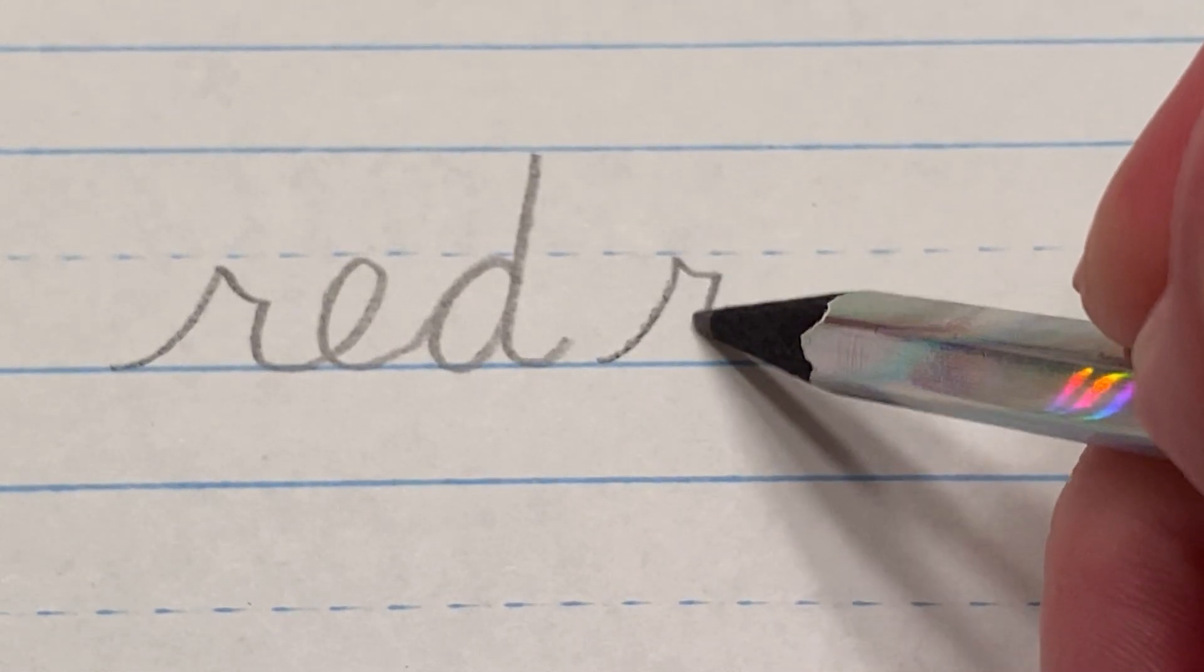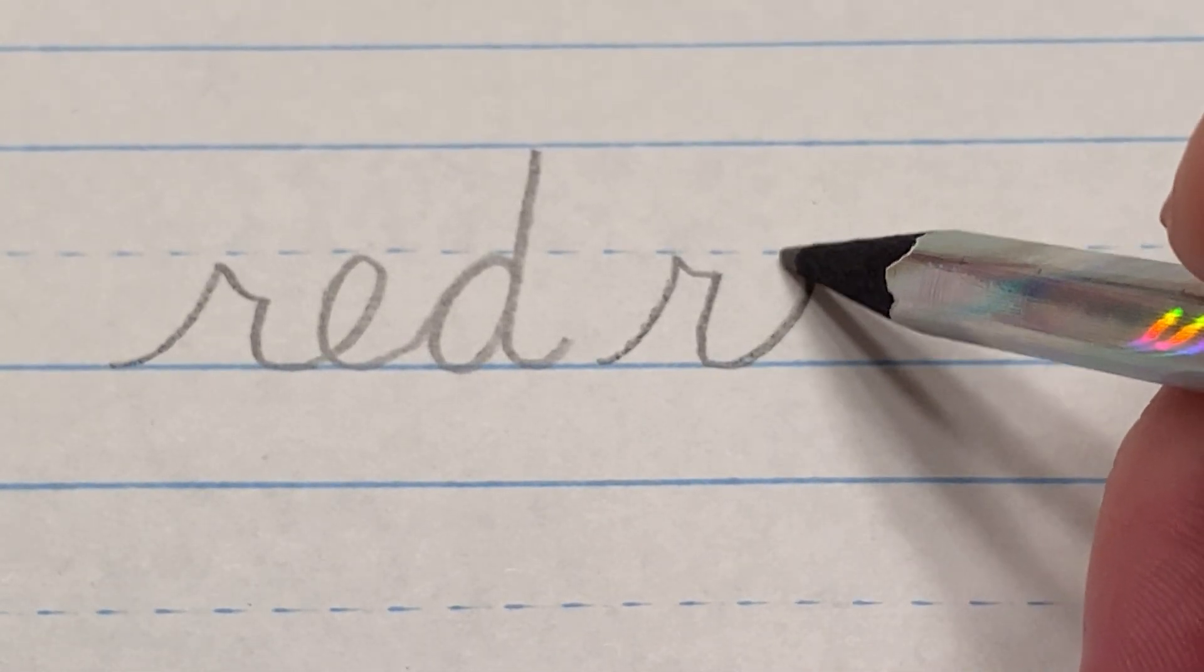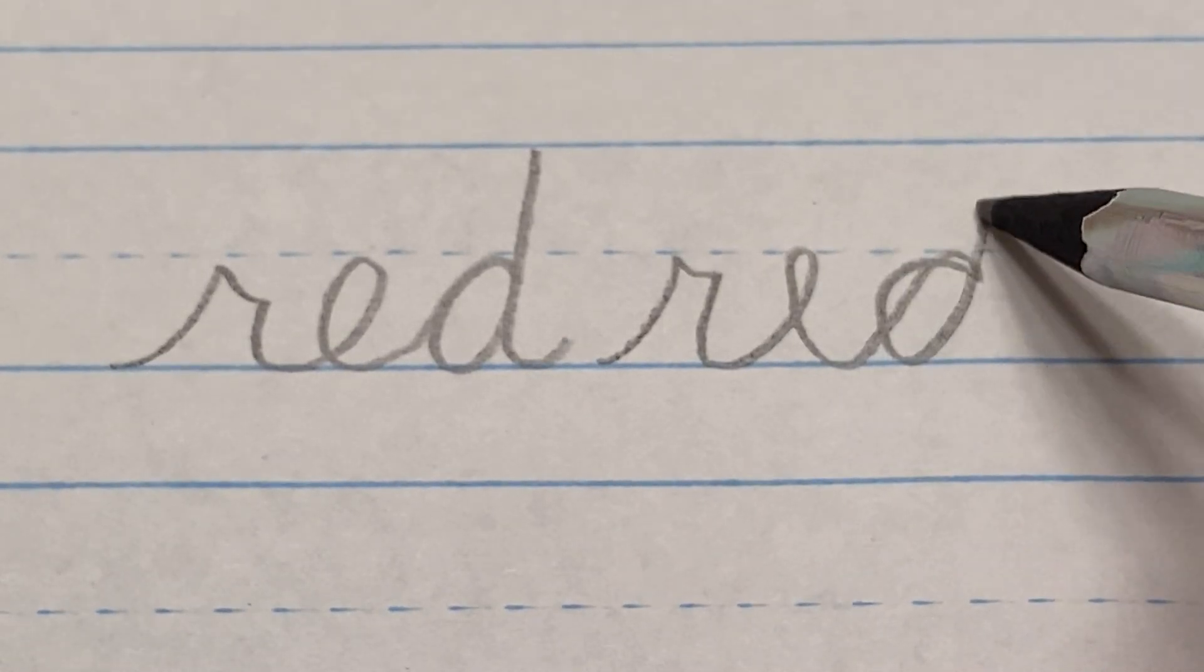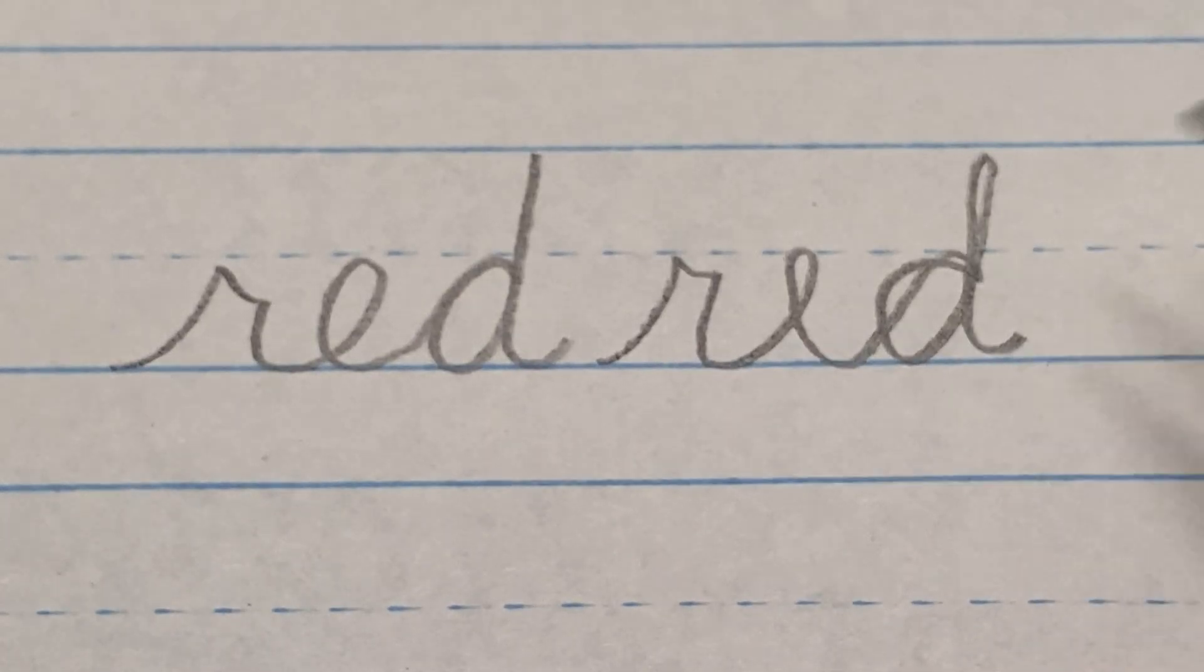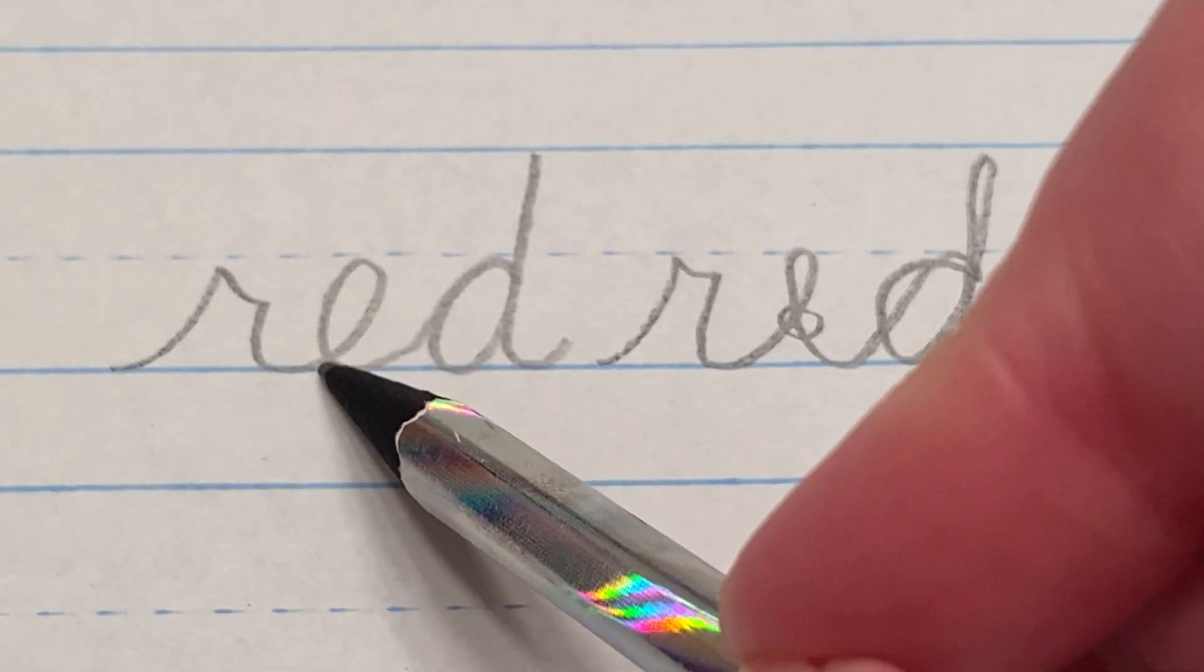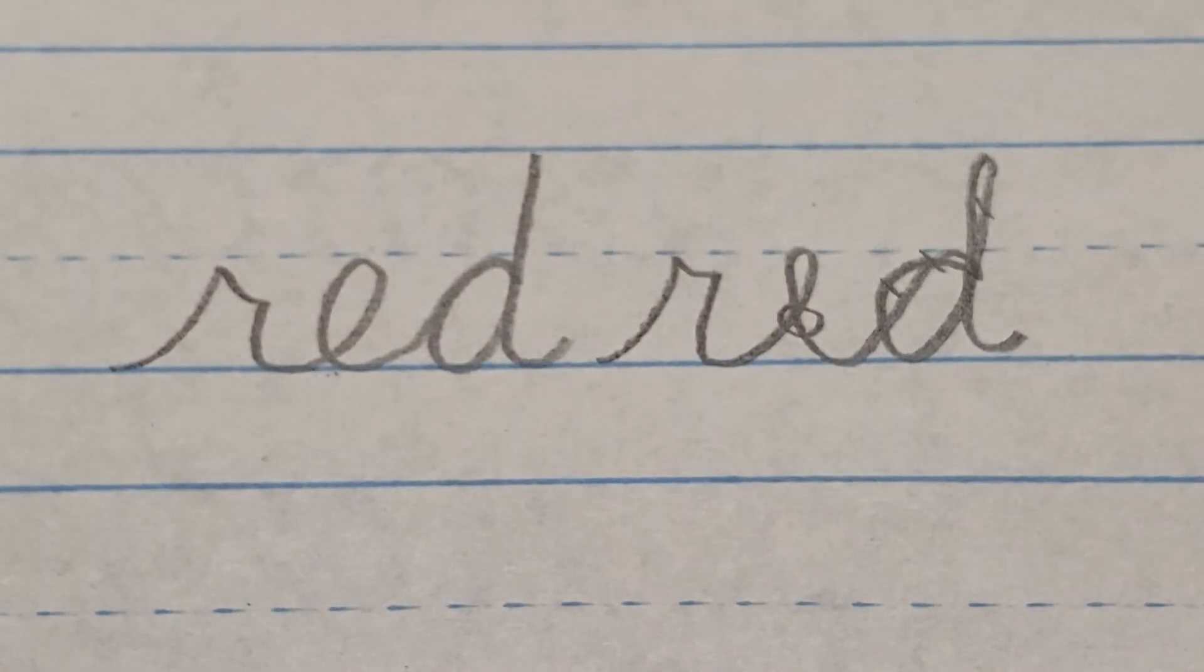Got your R going okay, then the E you cross too high, and the D it's really easy to get some extra loops in there if you don't take your time. So you see this is crossed too high, it should be closer to the floor and then all of these little extra loops.